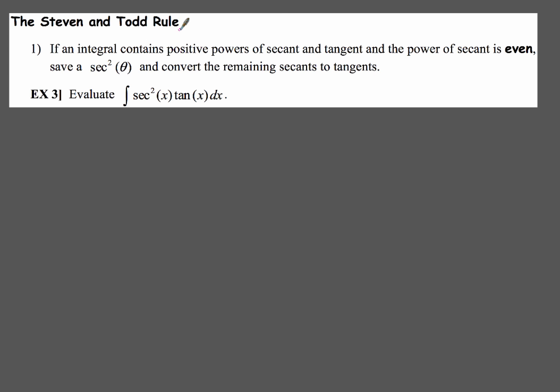Anytime you've got an integral containing positive powers of secant and tangent, and the power of secant is even, which it is, then we're going to save a secant squared and convert the remaining secants to tangents.